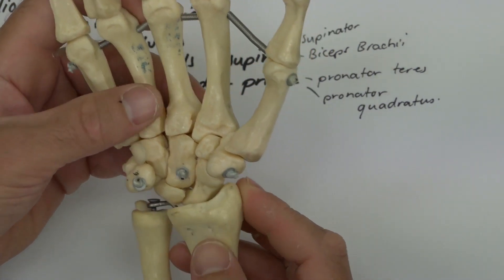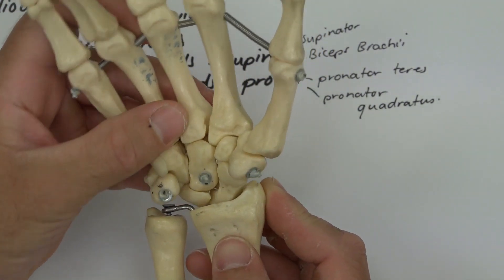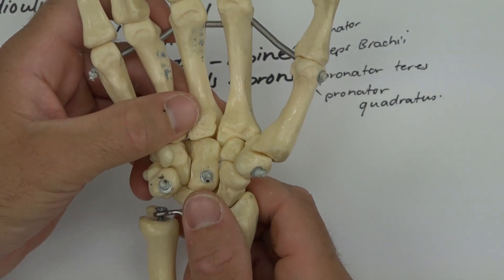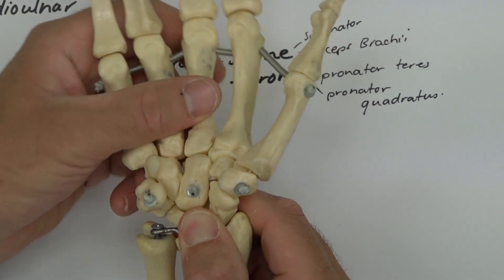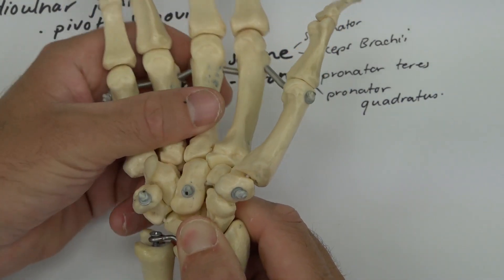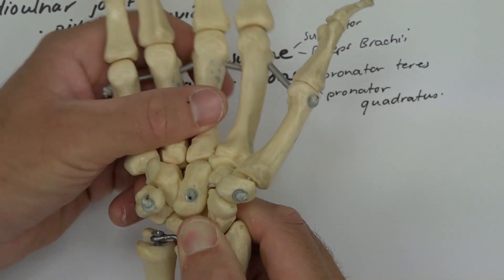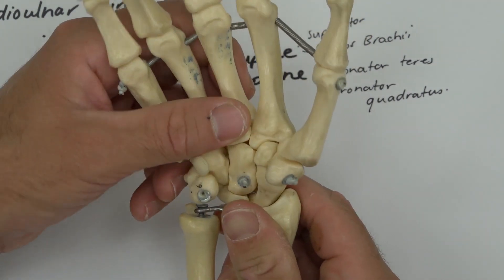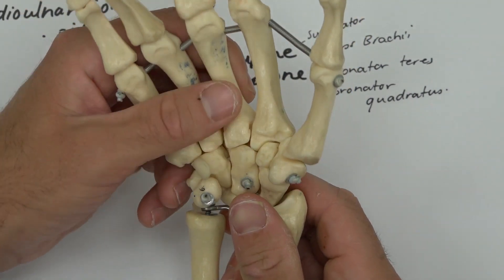When we flex the wrist, it's the motion of the proximal row about the radius. When we extend the wrist, the scaphoid and lunate are locked in place and it's the motion of the distal row on the proximal row. So full range of extension is done at the midcarpal joint and full range of flexion is done at the radiocarpal.